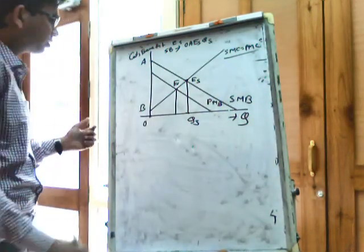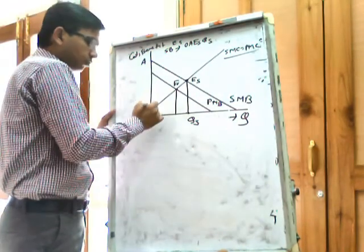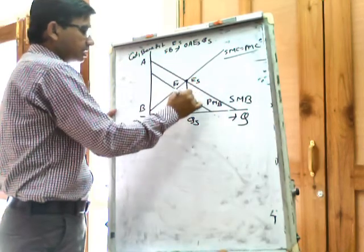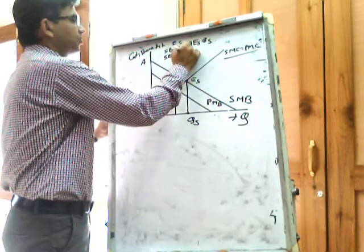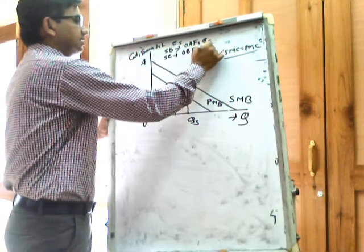And what will be the social cost? This is the social marginal cost curve. The social cost will be represented by the area O, B, ES, QS.